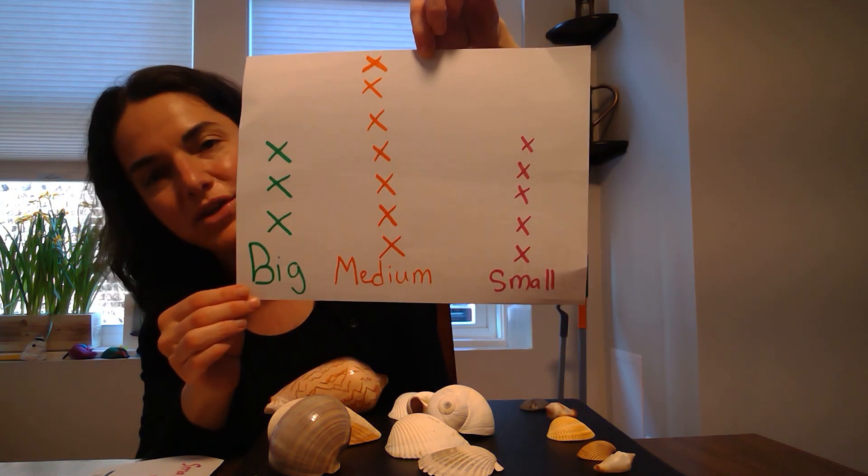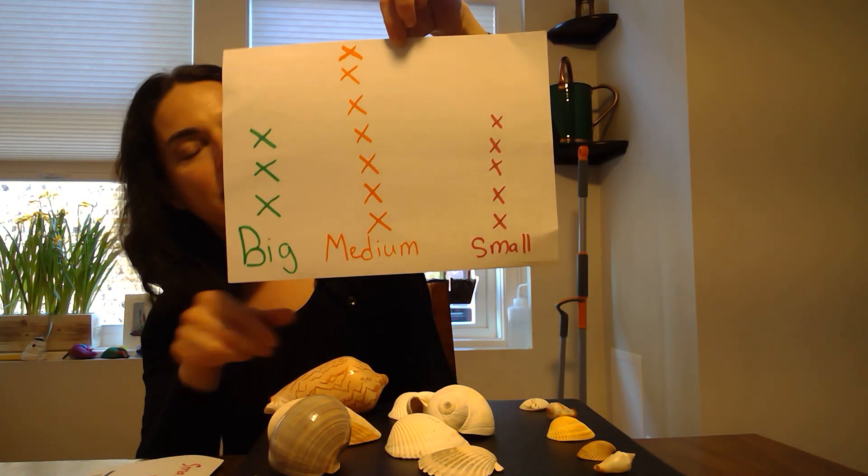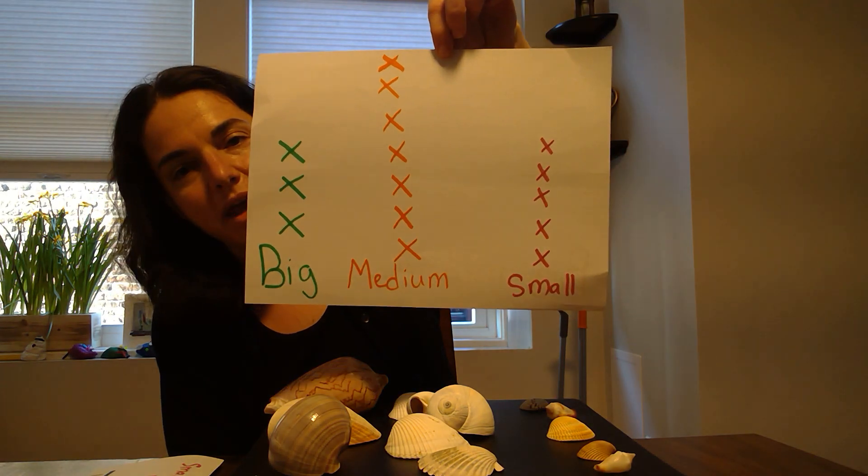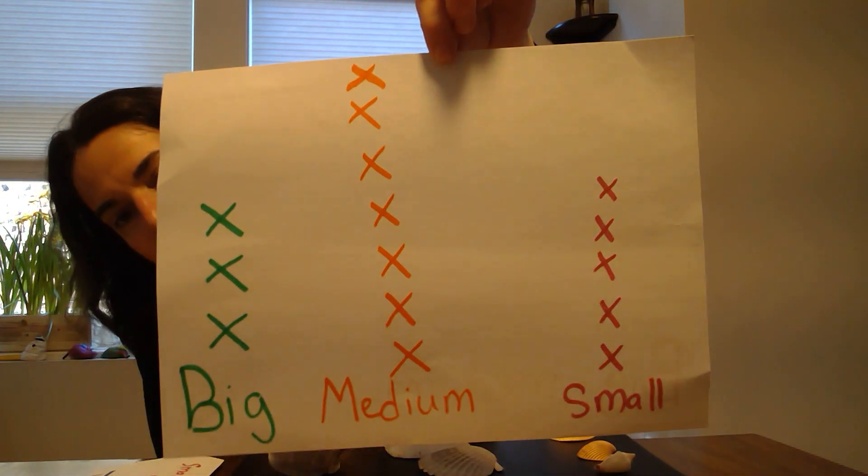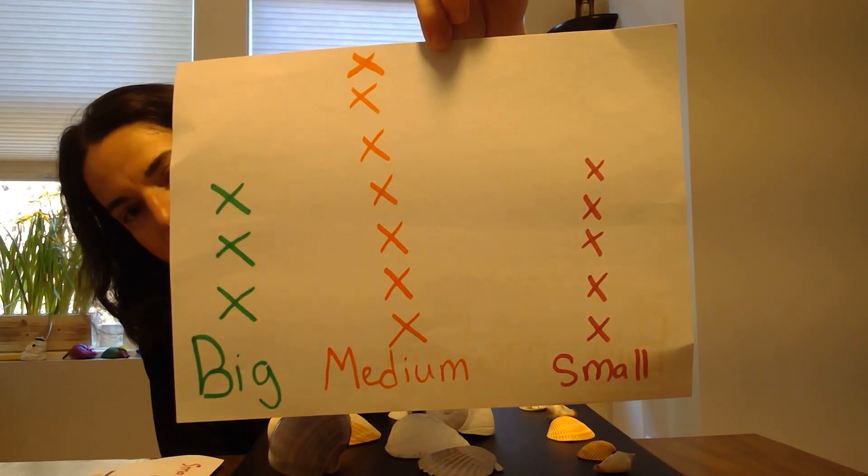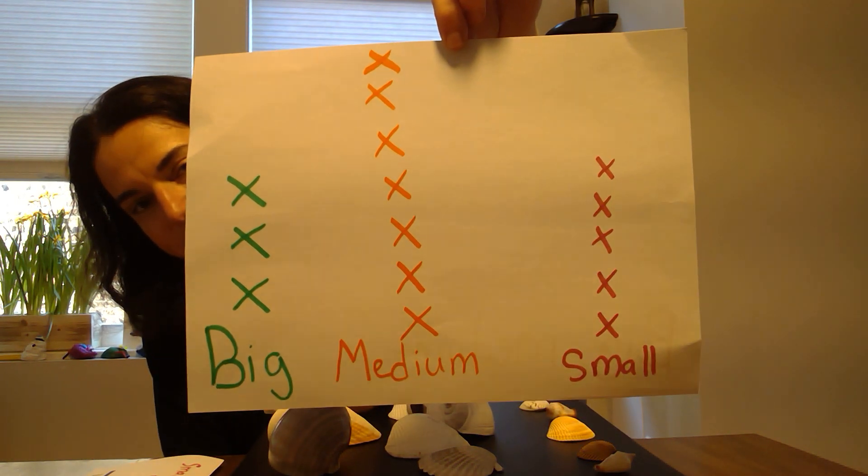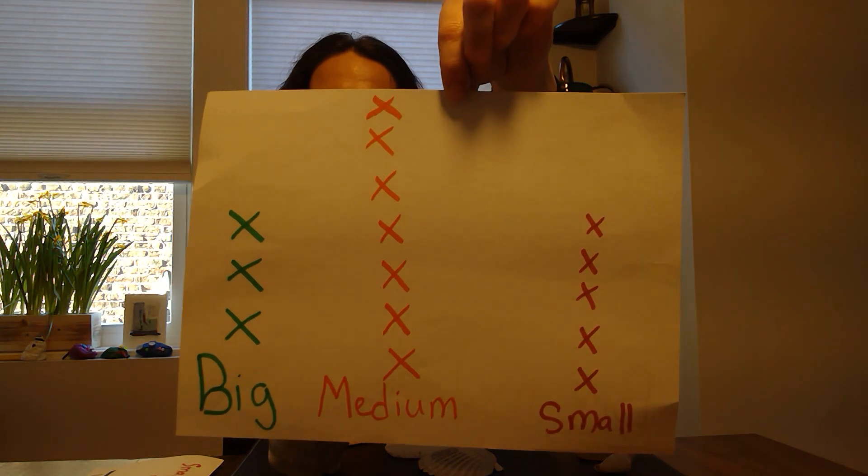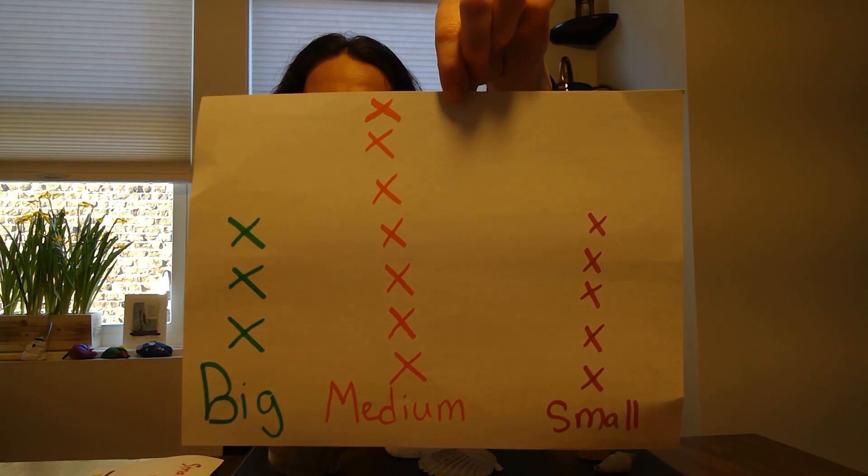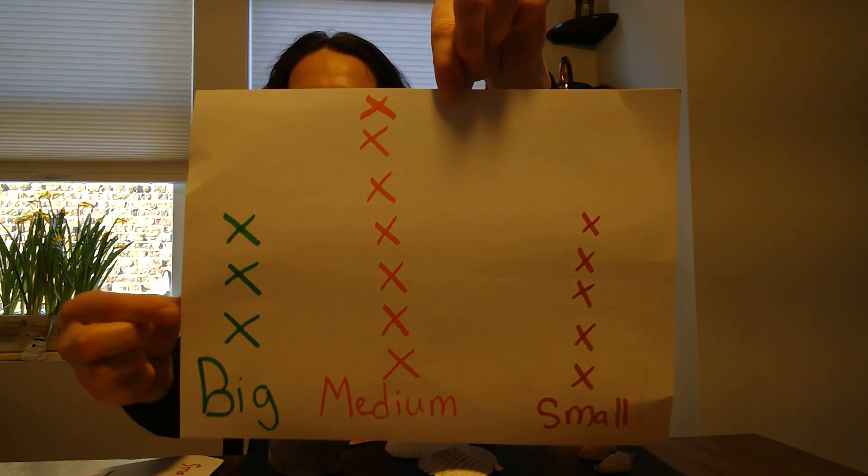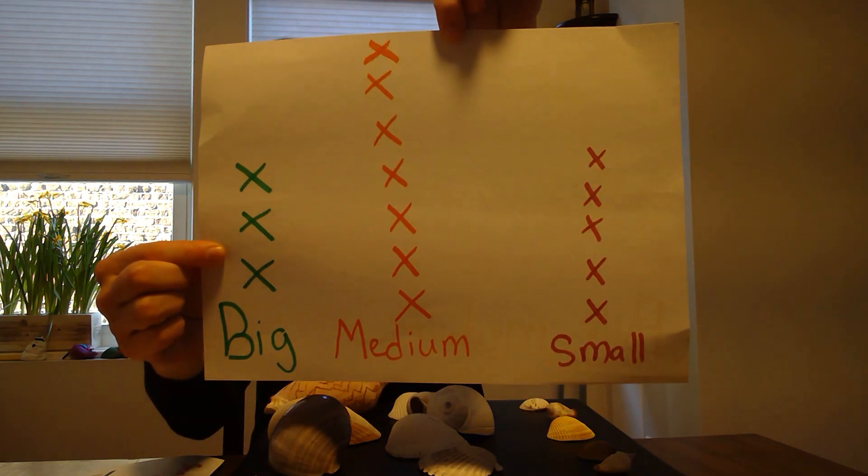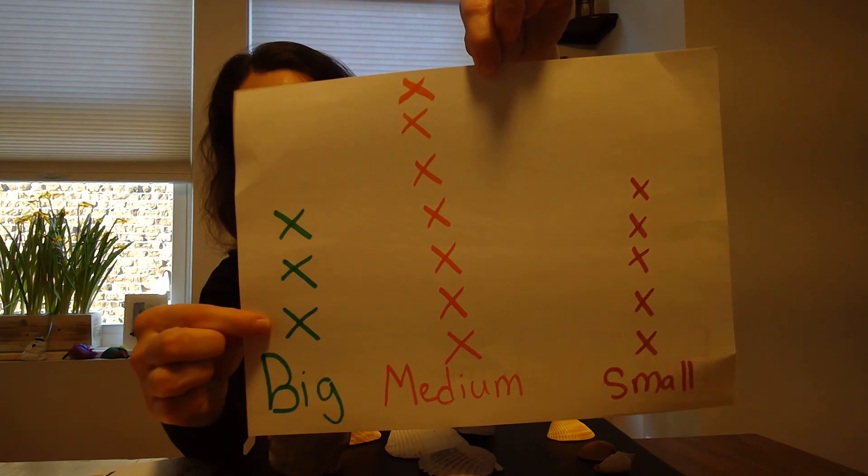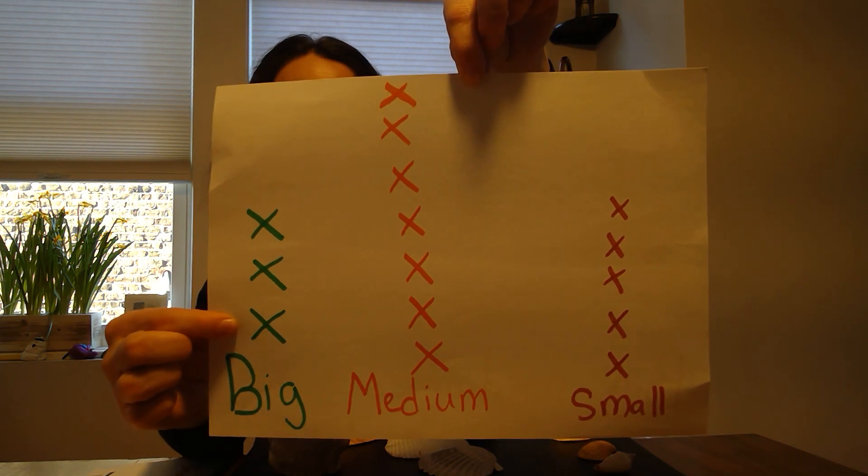Now that my shells are organized in a graph, I can use this information to decide which group has the least number of shells and which group has the greatest number of shells. Looking at my graph, which group has the greatest number of shells, the most? That's right. The medium-sized group has the most. Which group has the least number of shells, the fewest? That's right. The group with the biggest shells has the smallest number because there's only three. It has the least amount of shells.